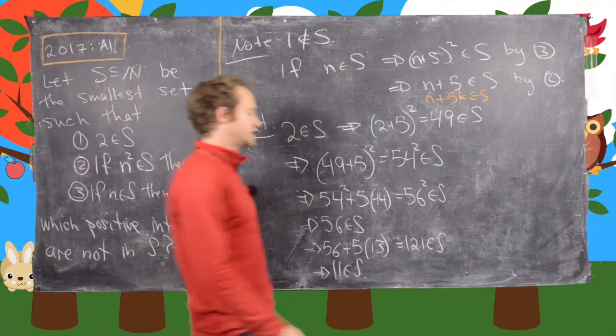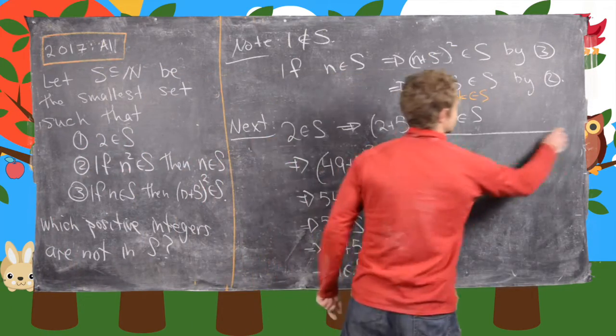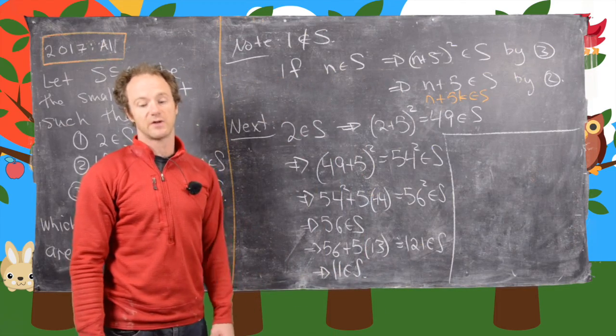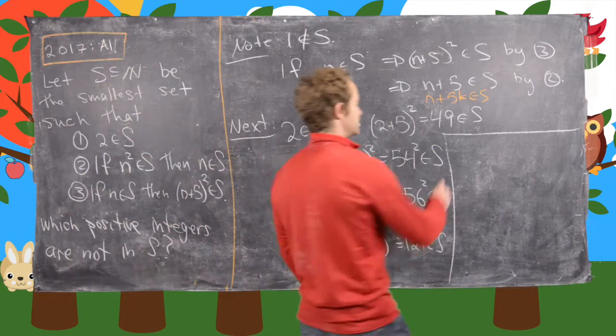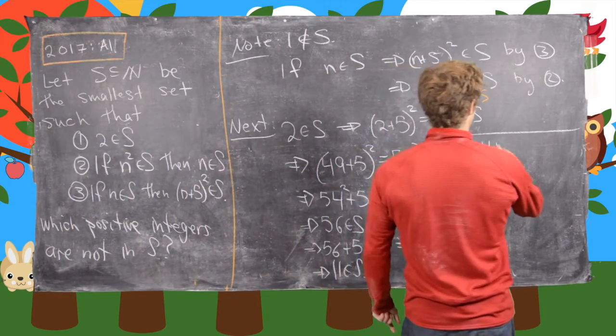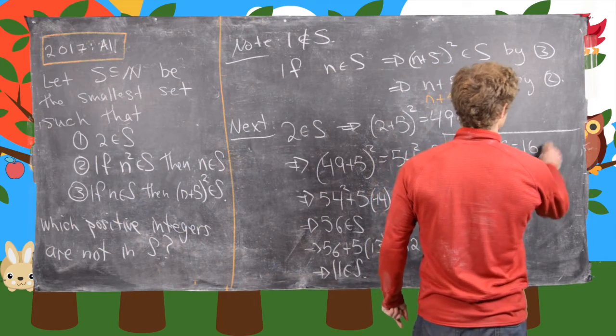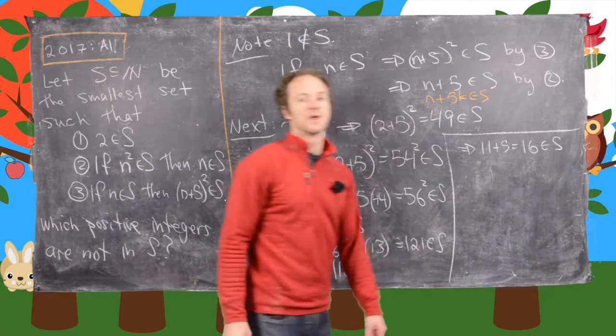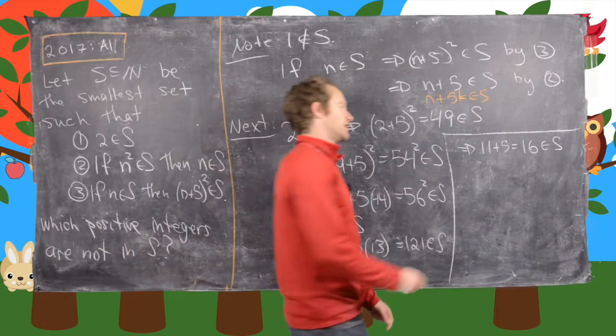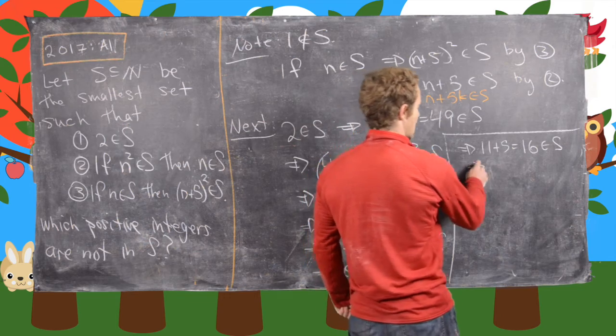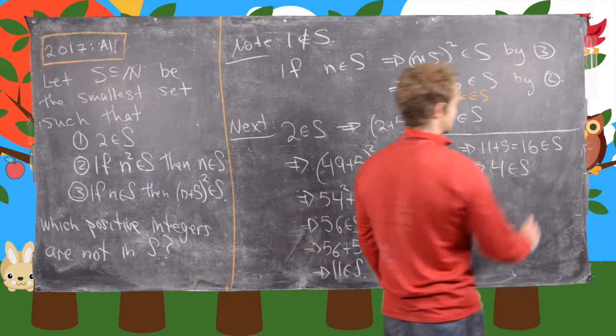But now we're good to go because if 11 is in S, then 11 plus 5 is in S. So in other words, 11 plus 5, which is equal to 16 is in S. But 16 has a nice property that it's 4 squared, which tells us that 4 is in S.